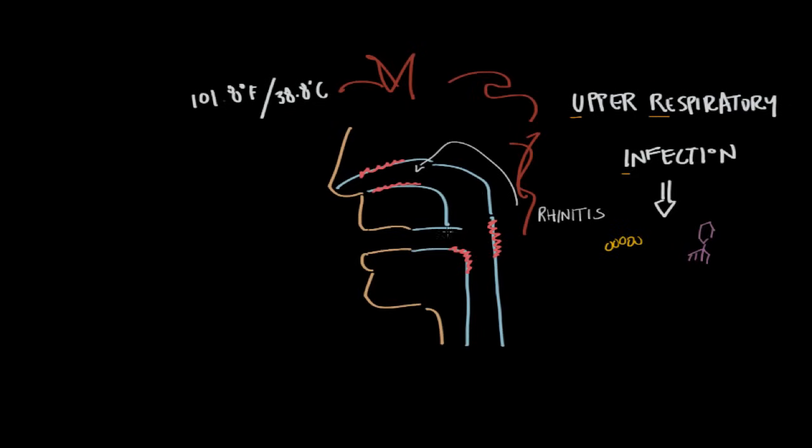So then kind of where the back of our throat is, where your uvula, that little thing that hangs in the back of your throat, that area is called the pharynx. So if that becomes infected in this area, we have pharyngitis.